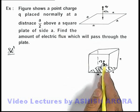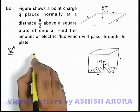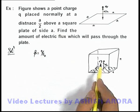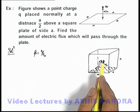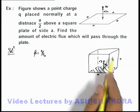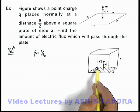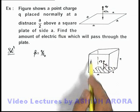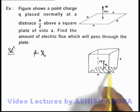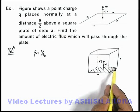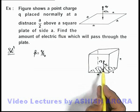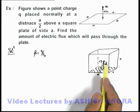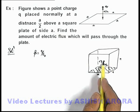Here we can see the charge will emit a total flux of q/ε₀ isotropically in its surrounding. So we can see there are 6 faces which are identical, by which the charge q is enclosed. All these plates are identical in their orientation with respect to the charge, so through all the plates the same flux will pass due to the charge q.